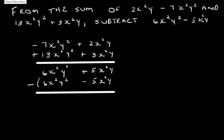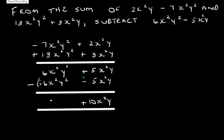Now we need to subtract 6x squared y squared minus 5x squared y. Remember, the signs must change — we multiply the negative through. A positive 6x squared y squared becomes negative, and a negative 5x squared y becomes positive. So 5x squared y plus 5x squared y gives 10x squared y, and 6x squared y squared minus 6x squared y squared gives zero.